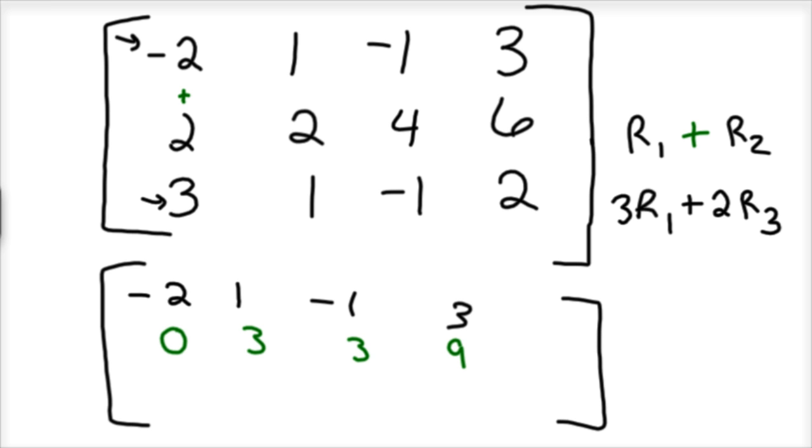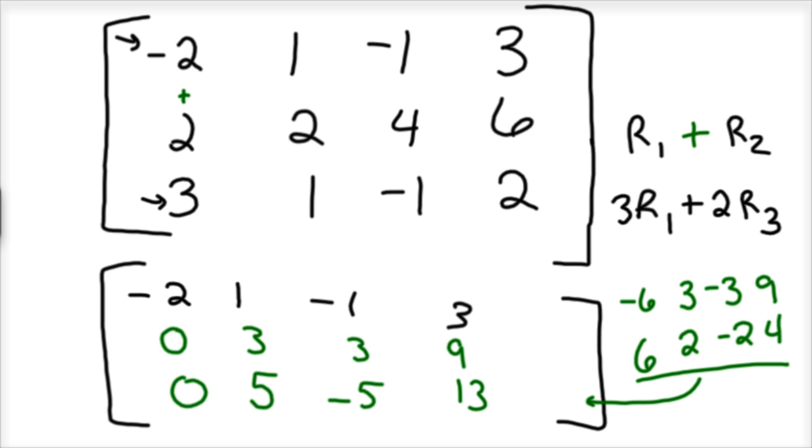And so we've got that one. And then, if I take 3 times row 1, I'd have negative 6, 3, negative 3, and 9. And if I take 2 times row 3, I'd have 6, 2, negative 2, and 4. And then add them together, and that's going to be my new row 3. So that would be 0, 5, negative 5, and 13. After that, we're ready to keep moving on.